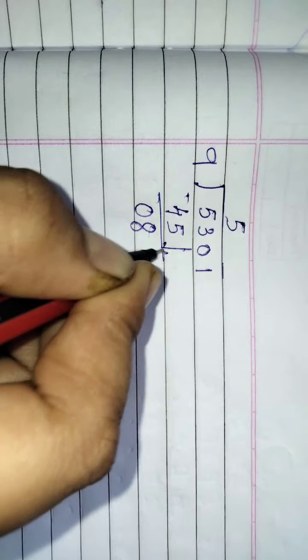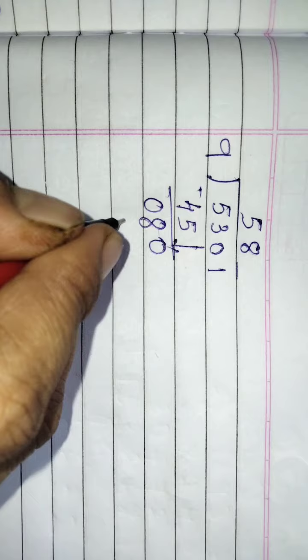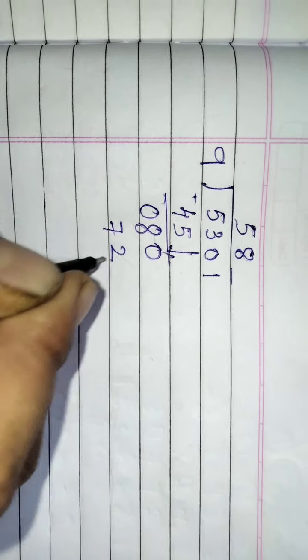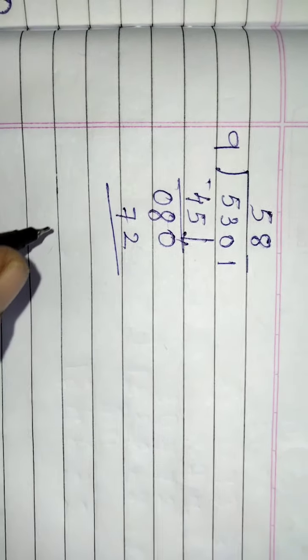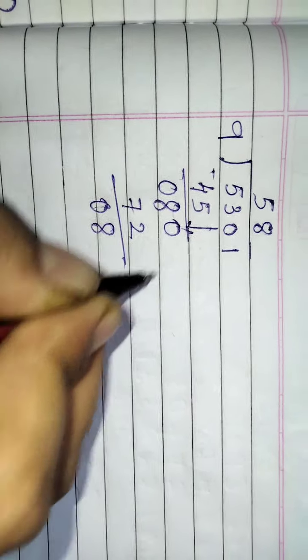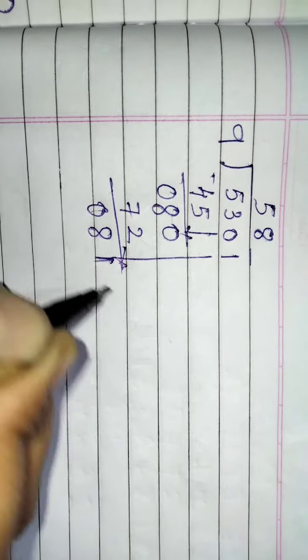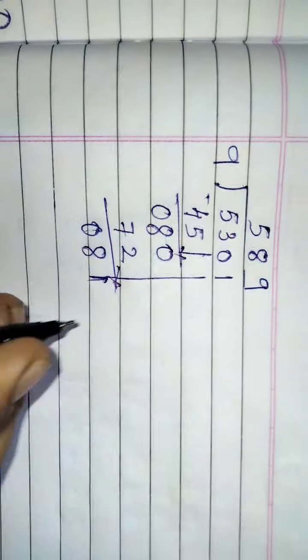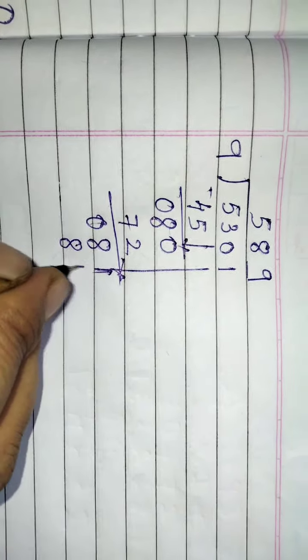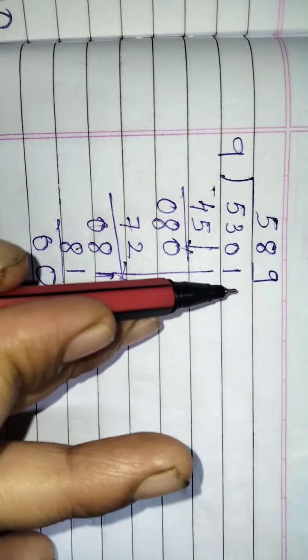This 0 will come down. 9 8's are 72, then 88. 9 9's are 81. Question 589.